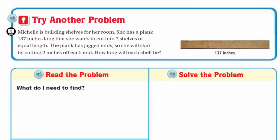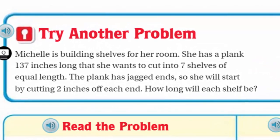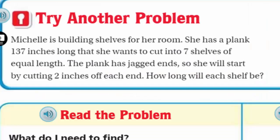Let's go to another problem — 'try another.' This one doesn't give us a graphic organizer with blanks, but we can still work through it. Michelle is building shelves for her room. She has a plank 137 inches long that she wants to cut into seven shelves of equal length. The plank has jagged edges, so she'll start by cutting two inches off each end. How long will each shelf be? The plank is 137 inches; she wants seven equal shelves, but first she cuts two inches off each end.